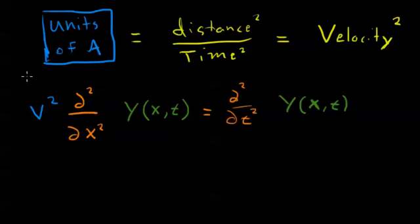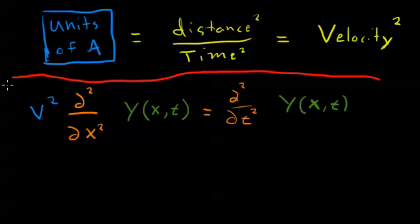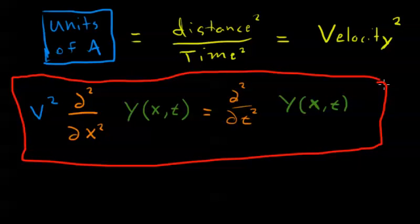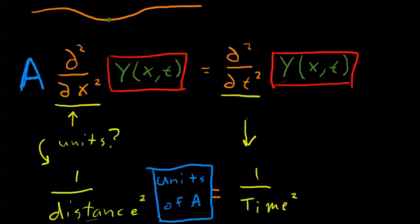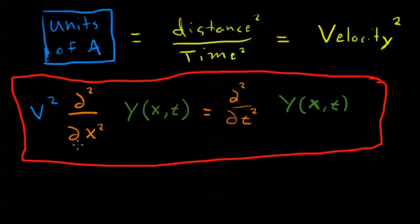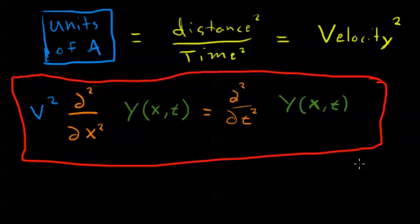We haven't necessarily proven this in a rigorous mathematical way — a pure mathematician might not believe how we've gotten here. But we've argued based on physical grounds that this makes sense as a differential equation that our wave function needs to satisfy. You could probably derive this more rigorously by treating each point on the string as a small mass connected to others. But I think arguing from physical grounds is a better way to get to it, and this is the equation you'll see in classical physics textbooks that describes waves.